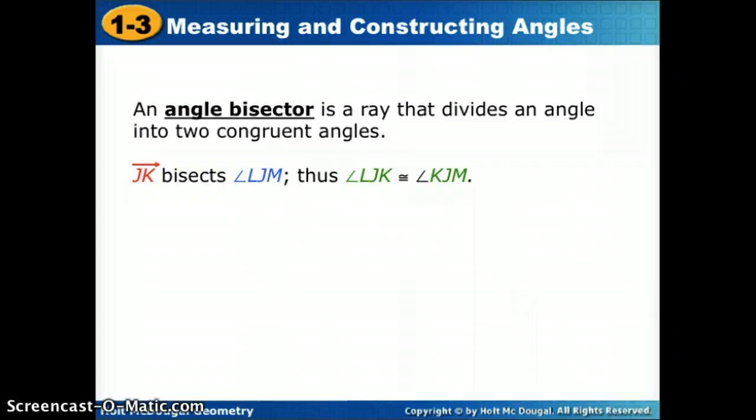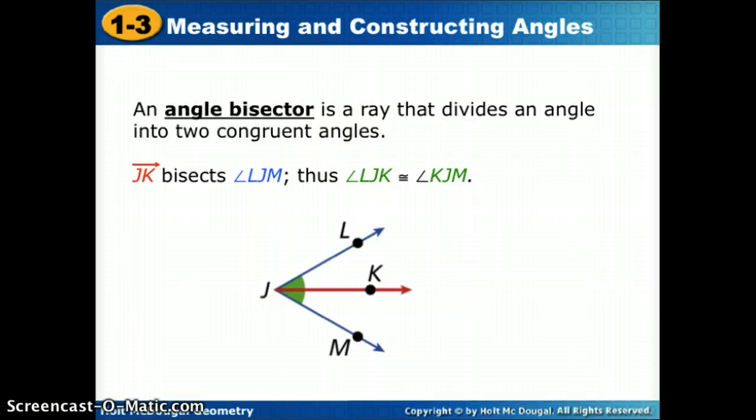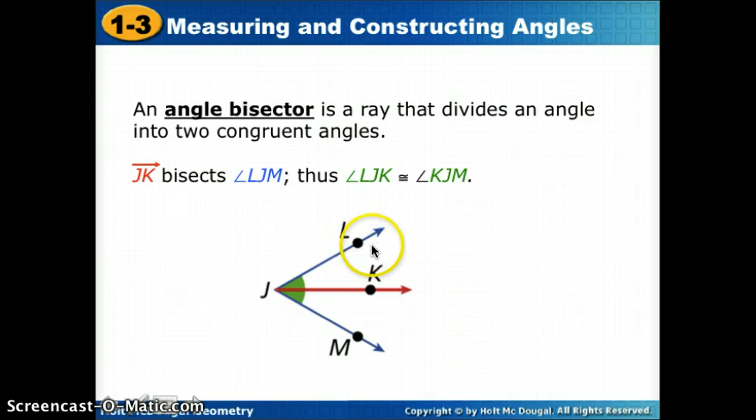Just like we had segment bisectors last class, we also have what are called angle bisectors. Anything that divides an angle into two halves. In this picture, we have angle LJM in blue, and it's saying JK, this is ray JK, is bisecting or cutting LJM in half. So if it cuts it in half, we can say that the two halves have equal measures, or their angles are congruent. Let's use that to solve a problem.